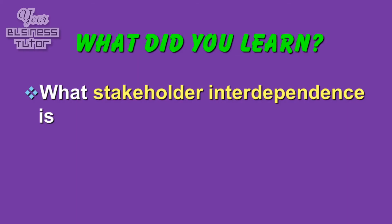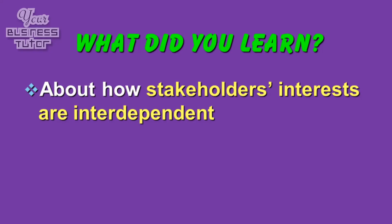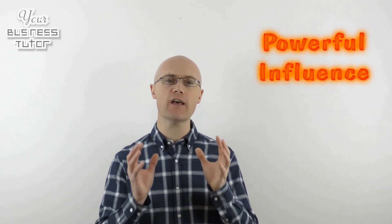So what did we learn in today's presentation? Well, first of all, we identified what stakeholder interdependence is. And then after that, we explored how stakeholders' interests are interdependent. As you have probably worked out from the examples we've looked at, stakeholder interdependence can have a powerful influence on stakeholders successfully achieving their interests. This is because when stakeholders cooperate or work together for an outcome that is positive to both, they will be far more powerful.